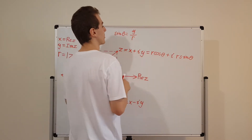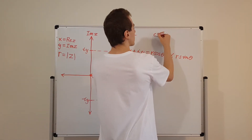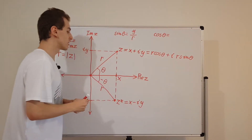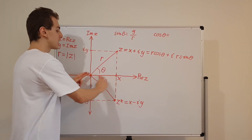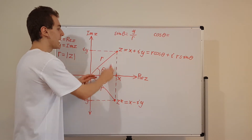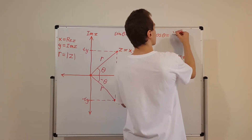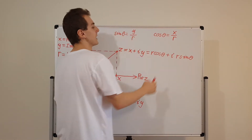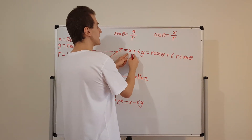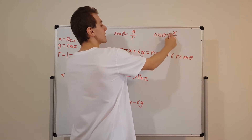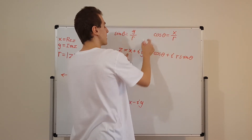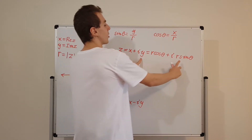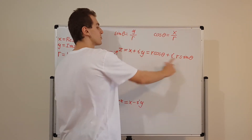The same thing happens with cosine. Cosine of theta is adjacent over hypotenuse — this is the adjacent and this is the hypotenuse — we have x over r. Multiplying both sides by r gives us x equals r cosine theta. And y equals r sine theta. So that is where these relationships come from.